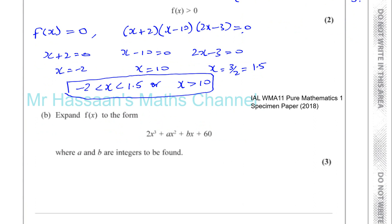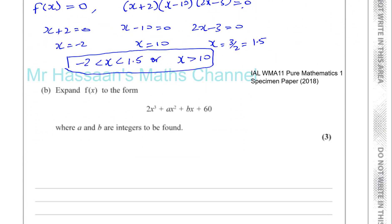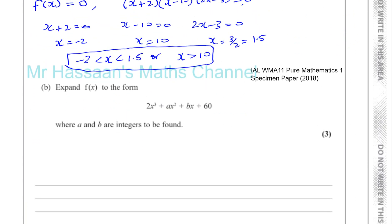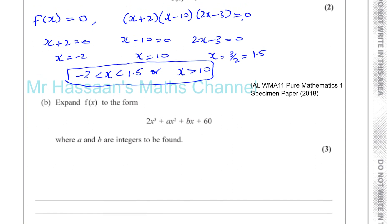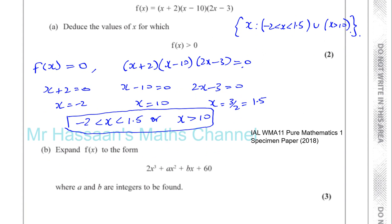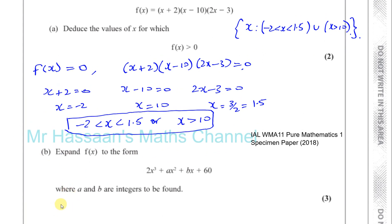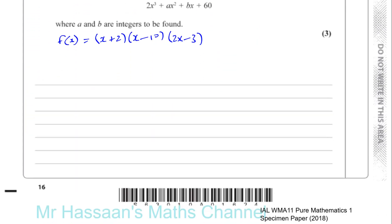Now part b. It says expand f of x to the form 2x cubed plus ax squared plus bx plus 60, where a and b are integers to be found. So we take the original equation: f of x equals x plus 2 times x minus 1 times 2x minus 3, and we expand it.